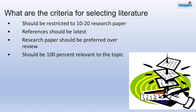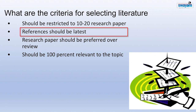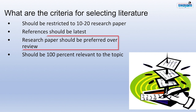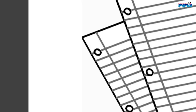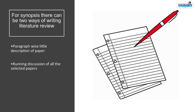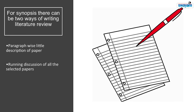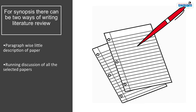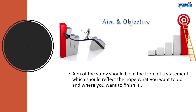Now let us look at the criteria for selecting literature. For a synopsis, it should be restricted to 10 to 20 research papers which are important. References should be latest; research papers should be preferred over review papers and should be 100 percent relevant to the topic. For synopsis there can be two ways of writing literature review: paragraph-wise description of each paper, or a running discussion of all selected papers.